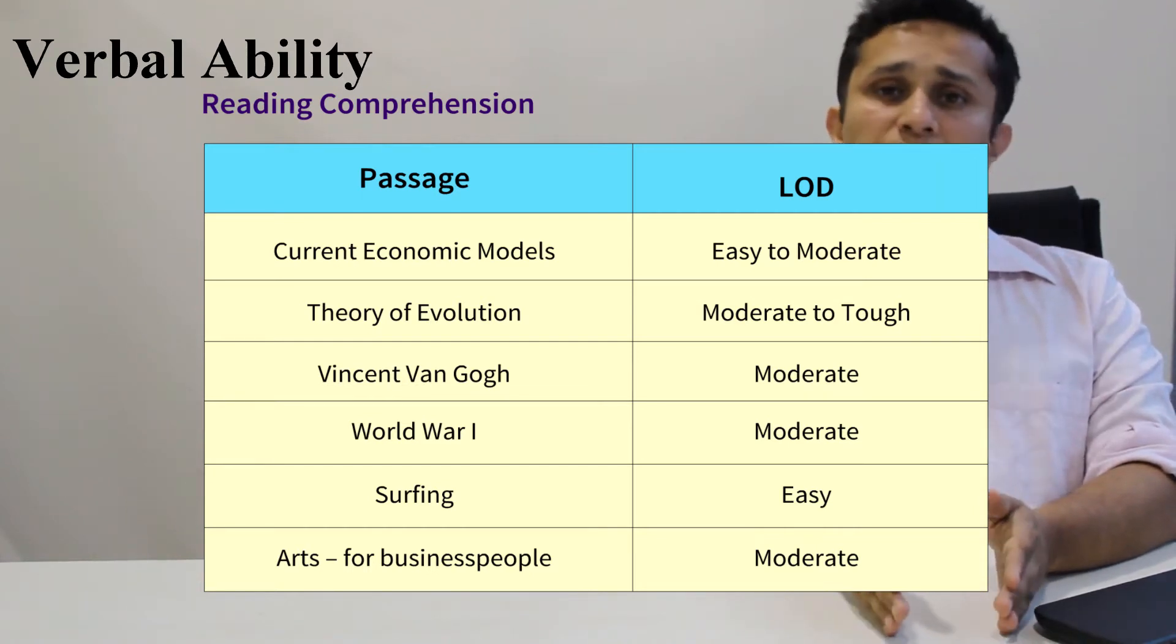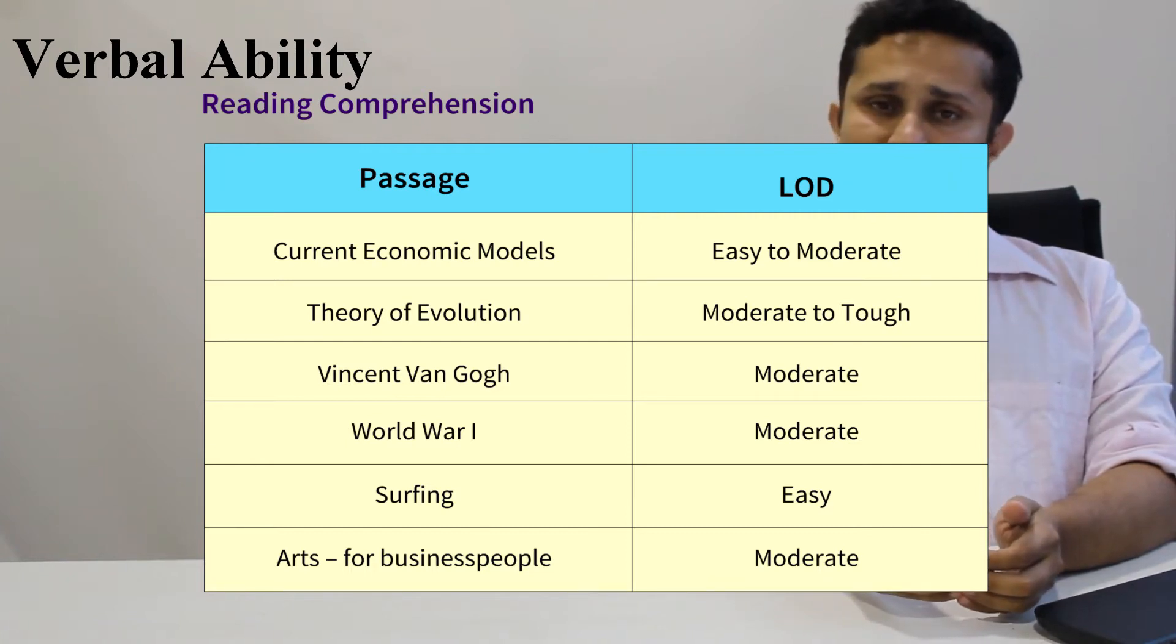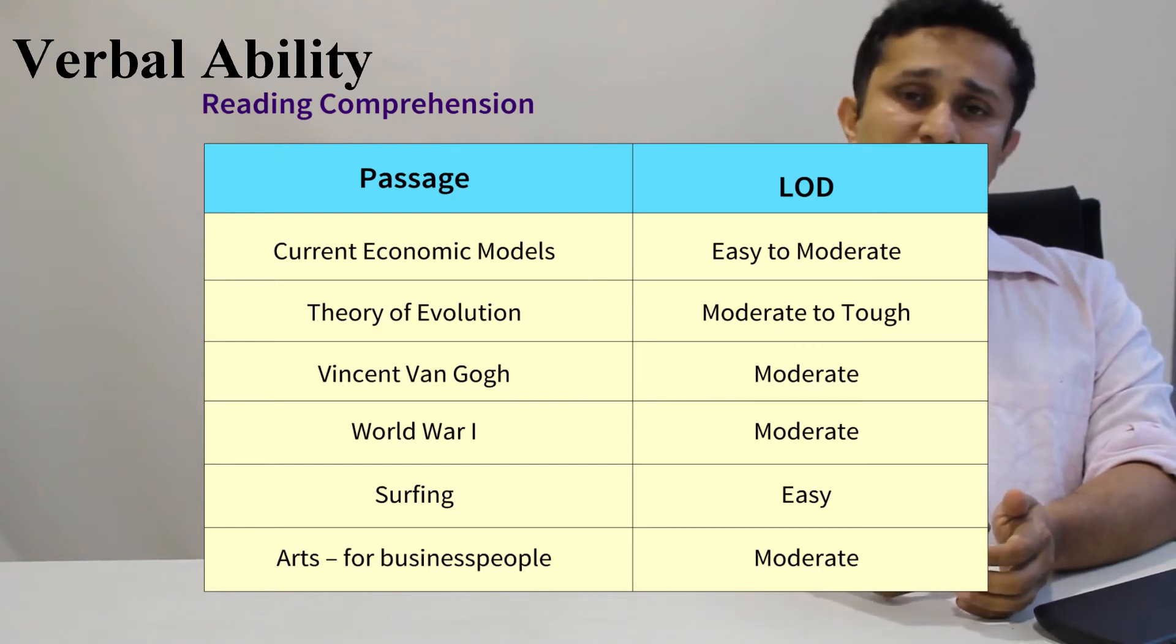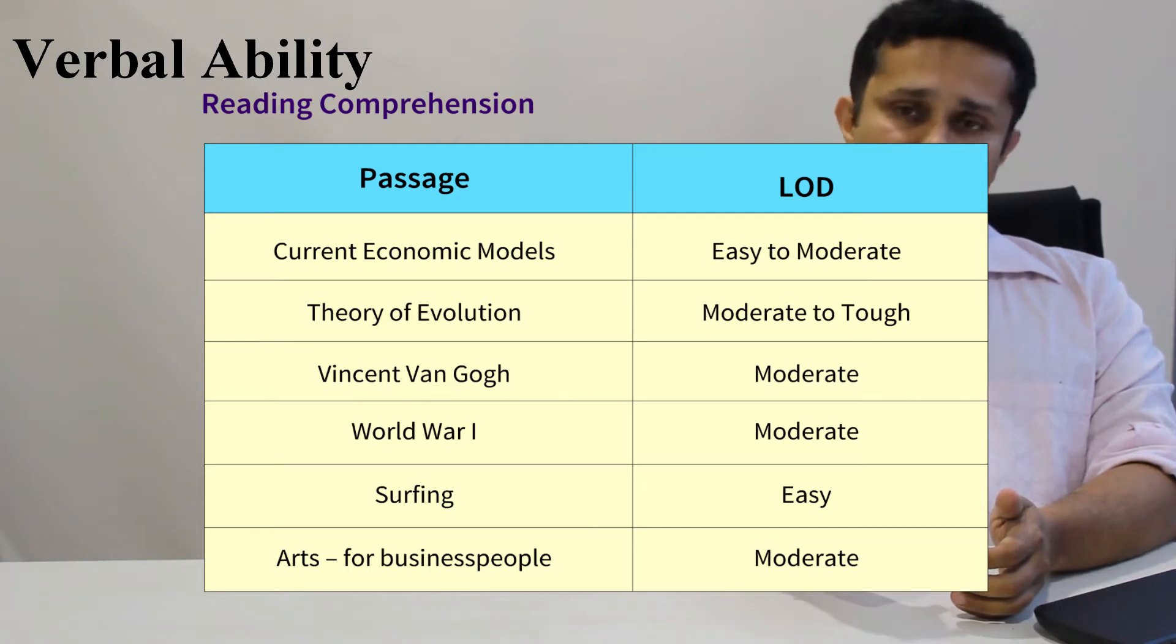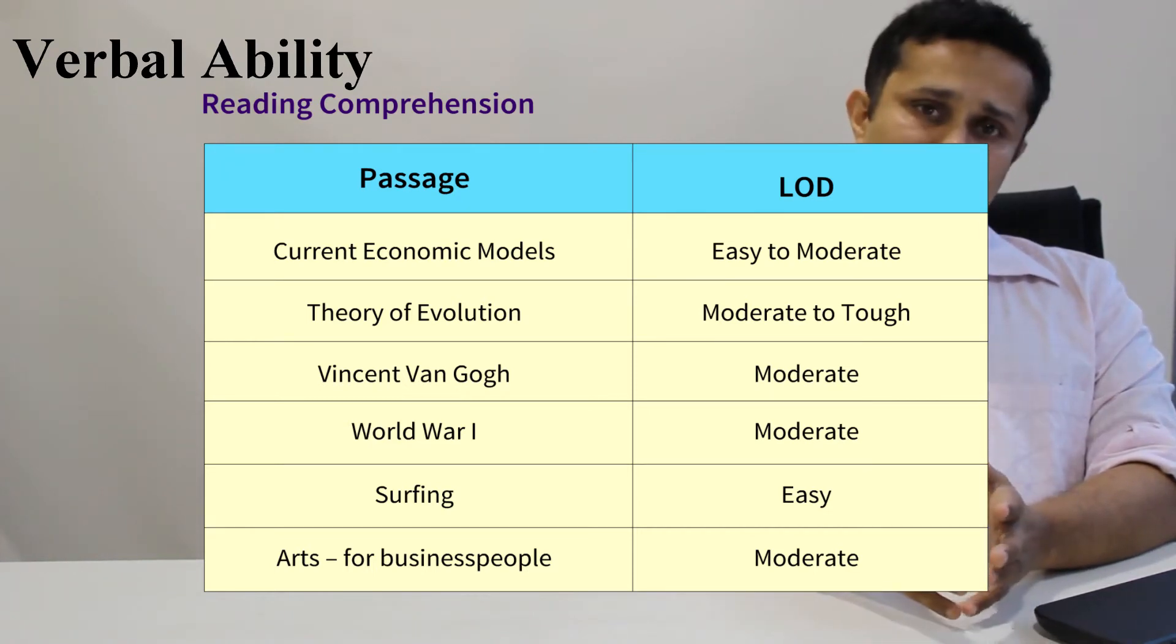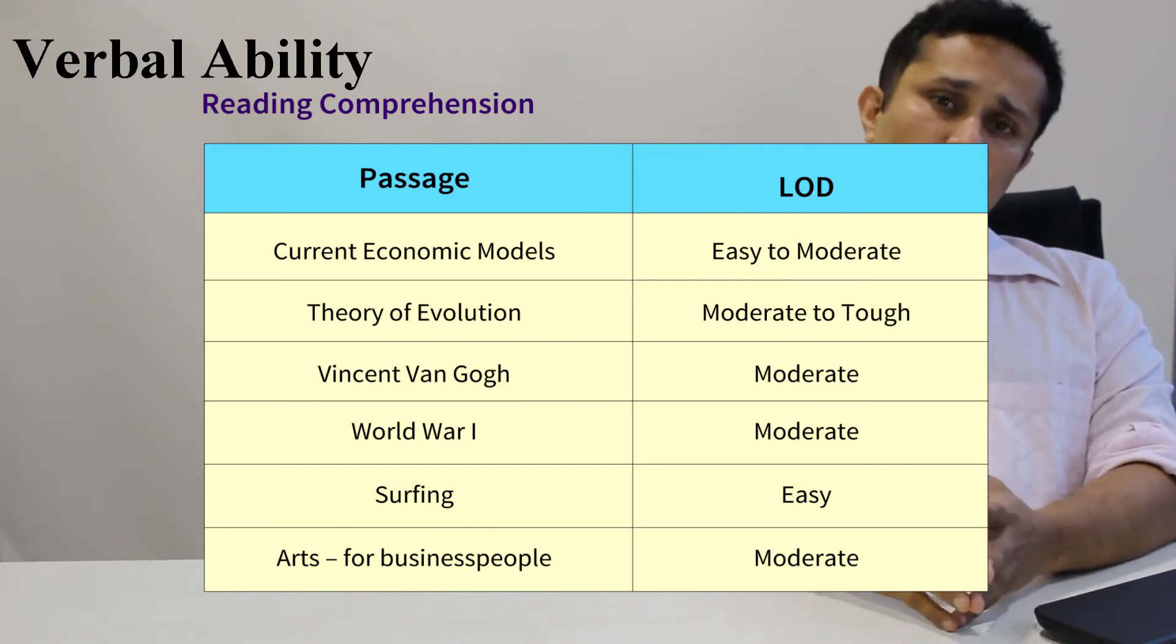In general, how many should you have attempted? The 2 easier three-question RCs and at least one of the 2 moderate longer six-question RCs. Of course, if you could have done both the six-question RCs, great. That would have straight away given you close to 15-16 attempts. And that is what I would have tried in the exam. So I would have tried to do 4 RCs in this mock.